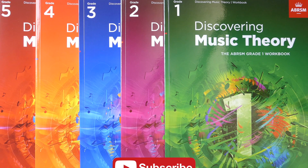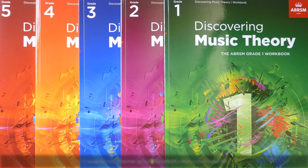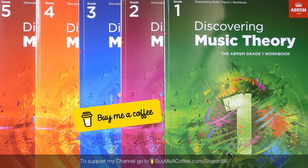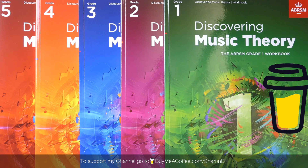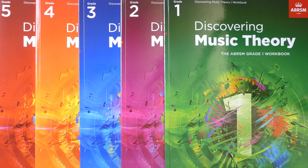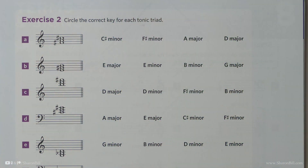You can support this channel by buying me a coffee at buymeacoffee.com forward slash Sharon Bill. For advert-free and longer lessons, you can become a patron at patreon.com forward slash Sharon Bill. Let's continue on in the Grade 3 Discovering Music Theory Workbook, moving on to page 43, continuing with the topic of tonic triads.